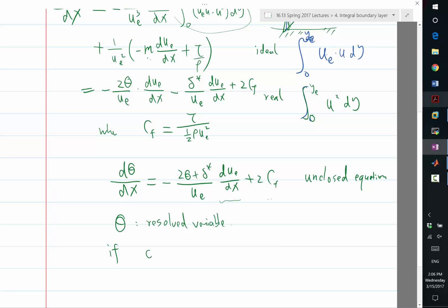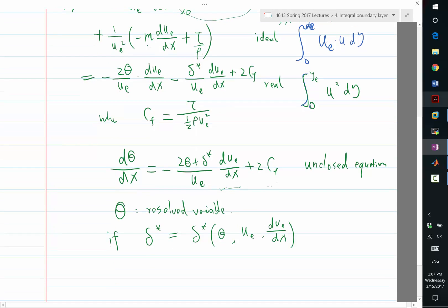If, for example, delta star can be written as a function of θ and, let's say, ue and due/dx and what else? Are there other unclosed variables? Yes. What if cf can also be written as a function of θ, ue, due/dx? Then, what do we have? We have a closed equation. We have an ODE for θ.